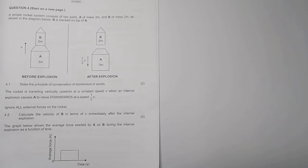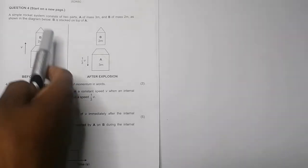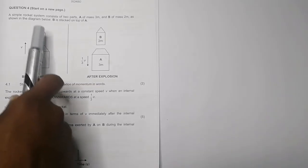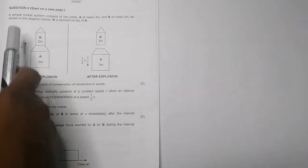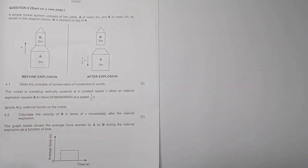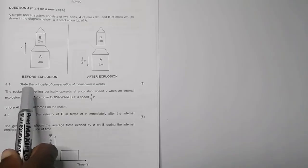They say a simple rocket system consists of two parts: A, which has a mass of 3m, and B, which has a mass of 2m, as shown in the diagram below. B is stacked on top of A, so there's our rocket there. Moving together, both the A and B part of the rocket are moving at a speed of v.